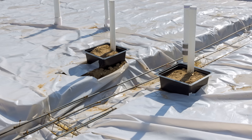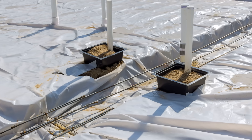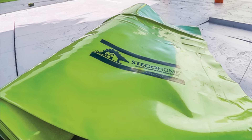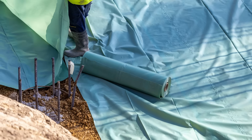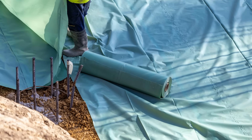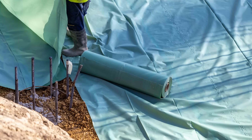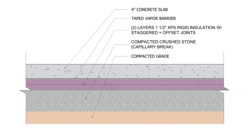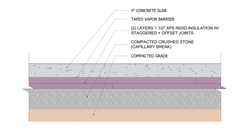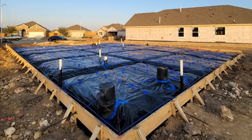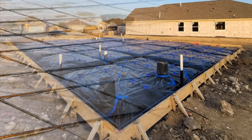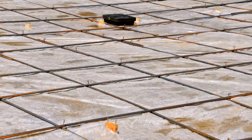Vapor barriers are a critical component in any slab-on-grade assembly or basement slab, but there's a lot of debate with regard to the function of a sub-slab vapor barrier and whether holes in the vapor barrier really matter, the location of the vapor barrier, and whether it needs to be airtight. In this video, we're discussing everything you need to know about sub-slab vapor barriers and busting a few myths about their function in slab assemblies.